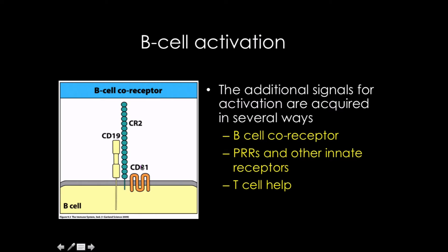The B-cell co-receptor consists of three parts: CD81, complement receptor 2, and CD19. CD81 plays a role predominantly in transport and guiding the co-receptor to the membrane. CR2 interacts with complement. CD19 has a long cytoplasmic chain that plays a role in signaling. But it's not just the B-cell co-receptor — sometimes we have pattern recognition receptors like toll-like receptors that can also play roles.